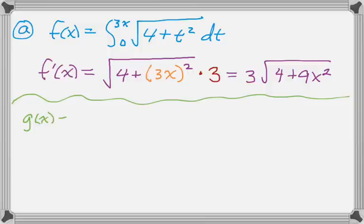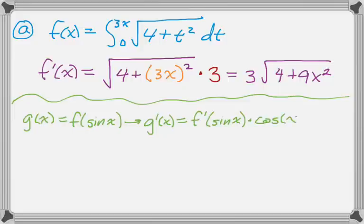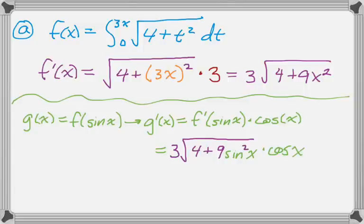Alright, next part. We are told that g of x is f of sine of x. And we're asked to find g prime. So g prime is going to be f prime of the inner function, which is sine of x, times the derivative of the inner function. So the derivative of sine is cosine. And then we just found f prime, so let's substitute in. So we get this. And that is g prime.